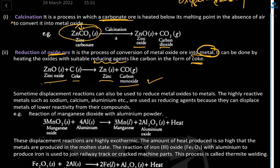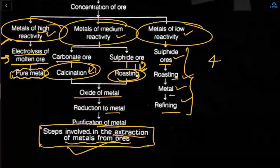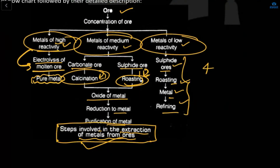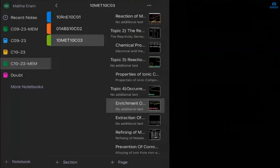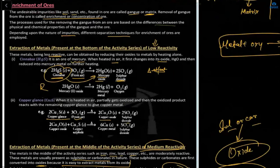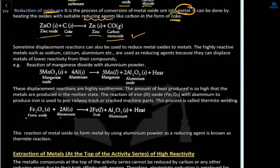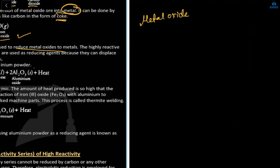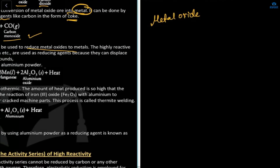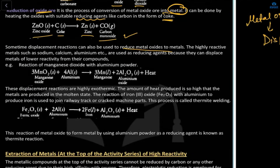For carbonate ore we use calcination; for sulfide ore we use roasting (with oxygen). After forming the oxide, reduction with coke gives the metal. Sometimes a displacement reaction is also used to reduce metal oxide to metal.